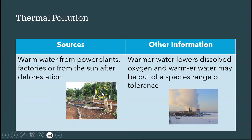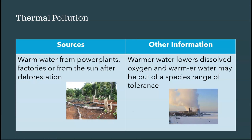A key physical property of water is that warmer water holds less dissolved oxygen — the opposite of what many expect. So higher temperatures mean less dissolved oxygen. Warmer water can also exceed a species' tolerance range. Species may swim away if they can, but those that can't escape the thermal pollution may die.